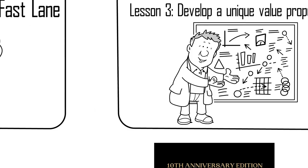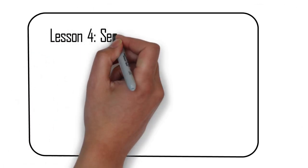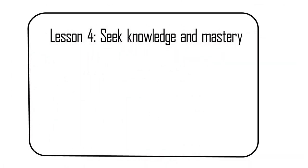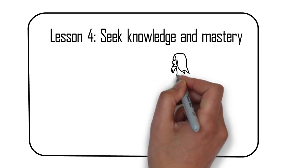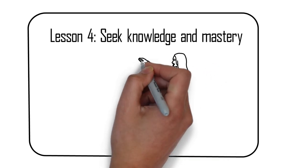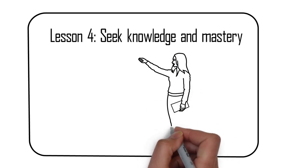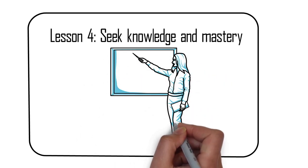Lesson 4: Seek Knowledge and Mastery. The fourth lesson from the book is the importance of seeking knowledge and mastery. DeMarco argues that you need to be an expert in your field in order to succeed in the fast lane. This requires continuous learning and development of deep understanding of your business and your industry.